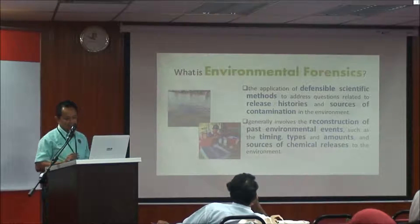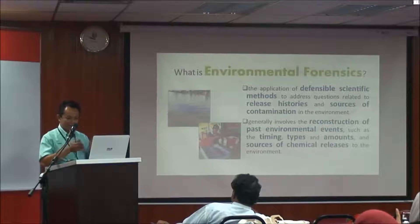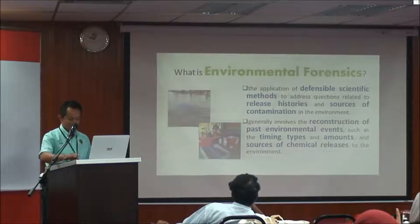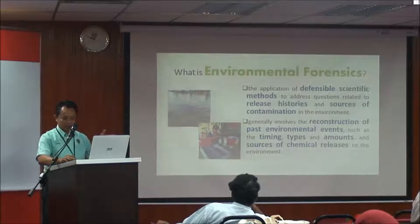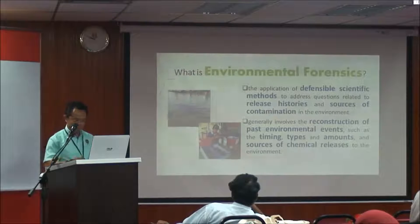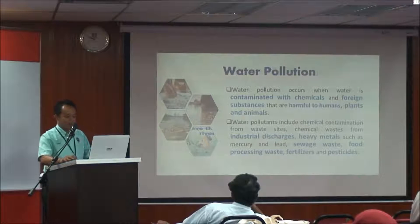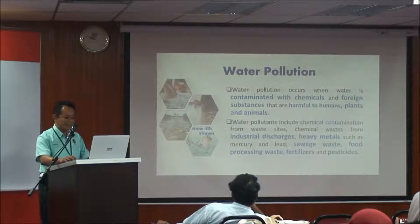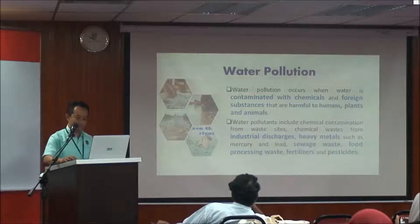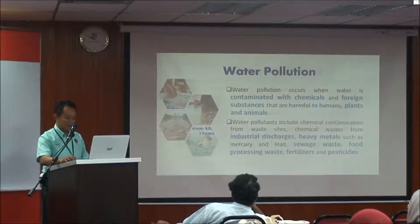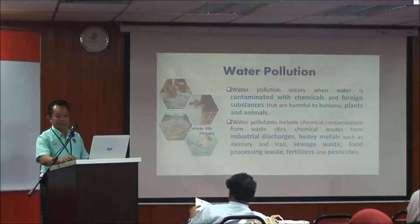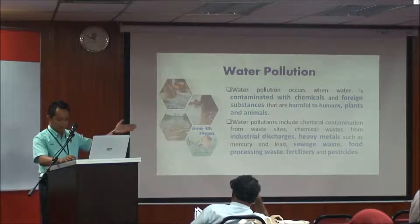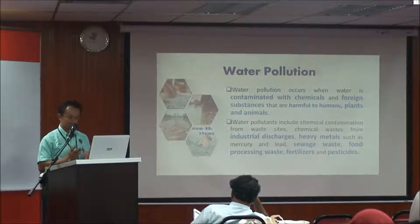For this case study today, we will discuss how to investigate — from inside the river to the source — and try to investigate the source of pollution, whether from non-point or point source. Water pollution occurs when water is contaminated with chemicals and foreign substances harmful to humans, plants and animals. Sources include chemical contamination from waste sites, industrial discharge, heavy metals, sewage, food processing, and fertilizers — all related to land use activities.